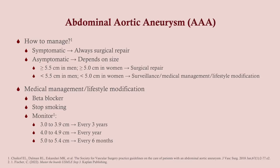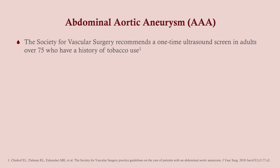Management depends on symptomaticity and size. If symptomatic, surgical repair. If asymptomatic, assess size: more than 5.5 cm in men or more than 5 cm in women warrants surgical repair. Below that, use medical management — beta blockers to reduce blood pressure, and stop smoking (the number one intervention). Monitoring intervals: 3–4 cm every 3 years, 4 cm annually, 5–5.4 cm every 6 months. The Society for Vascular Surgery recommends a one-time ultrasound screen for adults over 75 with a history of tobacco use.